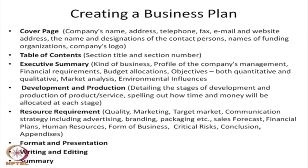When we have a business plan, what are the different sections? The first is the cover page that should mention the company's name, address, telephone number, fax number, email and website address, the name and designations of the contact persons, names of the funding organizations and also the company's logo. This will be followed by a table of contents where the title of each section along with the section number should be mentioned.